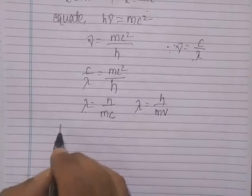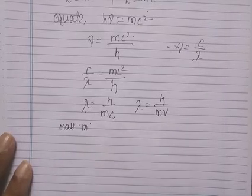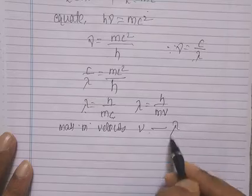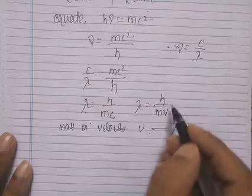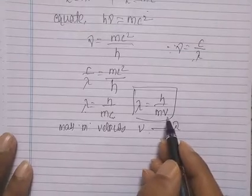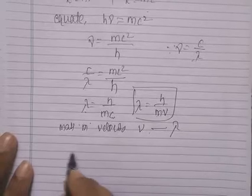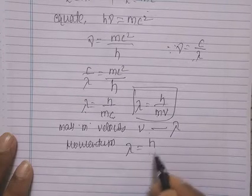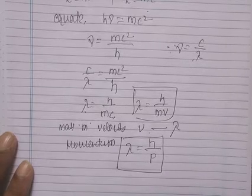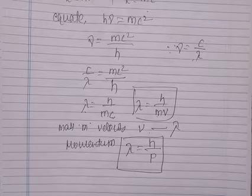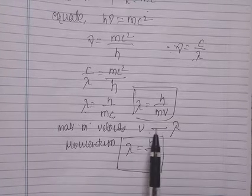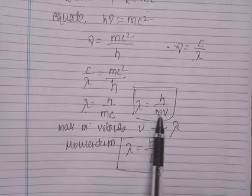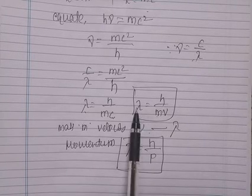De Broglie postulated that a particle of mass M moving with a velocity V has an associated wavelength λ. In the de Broglie equation, λ = h/mv, where λ is the wavelength, h is Planck's constant, M is the mass of the particle, and V is the velocity. These three terms — wavelength, mass, and velocity — are key.